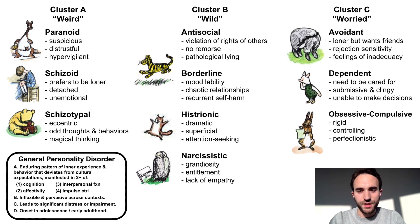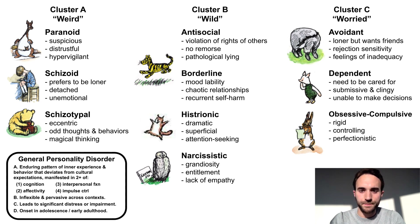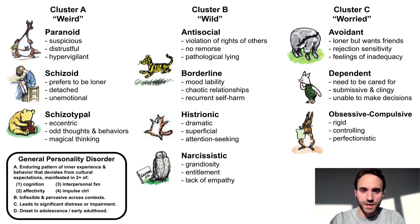Finally, let's discuss the Cluster C disorders. Avoidant personality disorder describes a person who is highly sensitive to rejection and has strong feelings of inadequacy, leading to them spending much of their time on their own even though they want to have friends — much like the lonely Eeyore, who keeps to his own gloomy corner of the woods due to his low self-esteem. Dependent personality disorder involves a need to be cared for, manifesting as submissive and clingy behavior and an inability to make their own decisions, much like Piglet, who is highly anxious and depends on others to have any sense of direction.